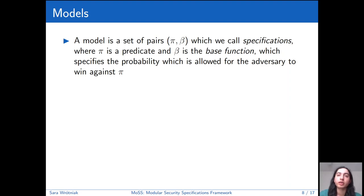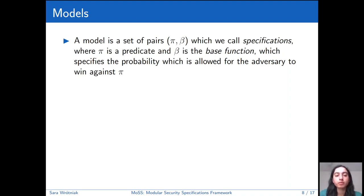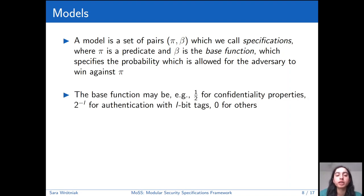More specifically, a model is a set of pairs (π, β) which we call specifications. π is a predicate and β is the base function, which specifies the probability the adversary is allowed to win against the predicate. Since models are sets, we can combine them by taking their union. The reason for the base function is that we might want different predicates to hold with different probabilities — for example, for confidentiality we might allow the adversary to win with probability one-half, and for authenticity we might allow 2^{-l} probability if we're using l-bit tags.